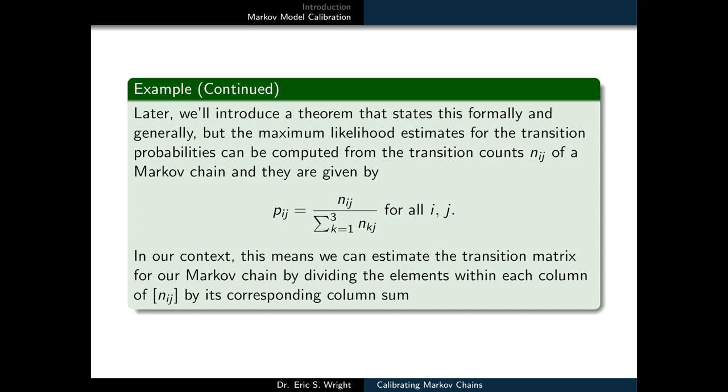But for now, the maximum likelihood estimates for the transition probabilities can be computed simply from the transition counts of the Markov chain that we've observed. And they're given by the following formula.